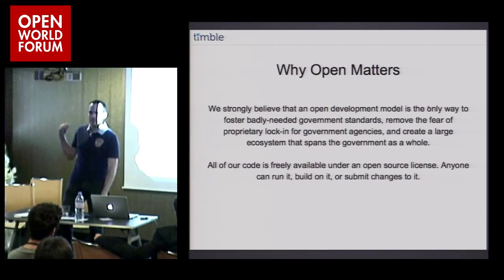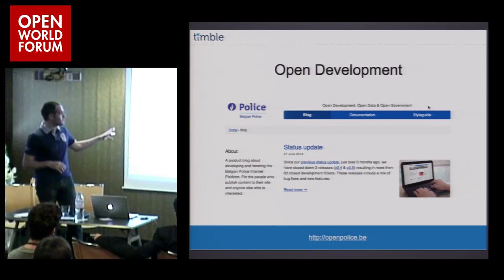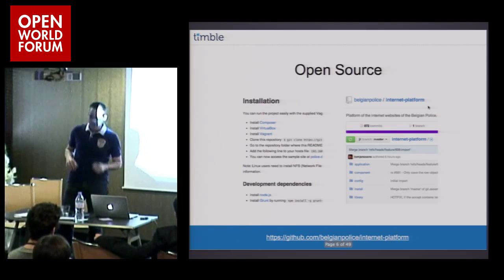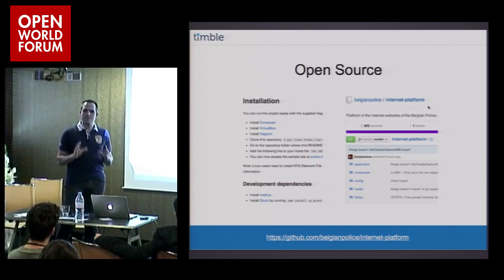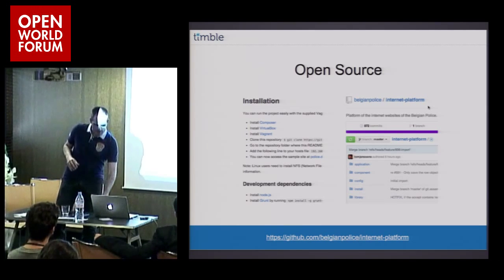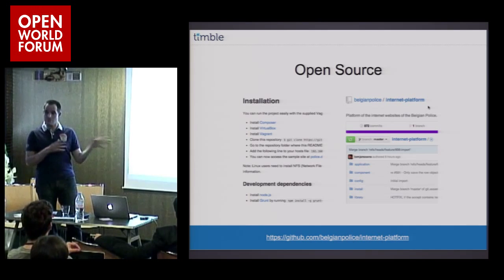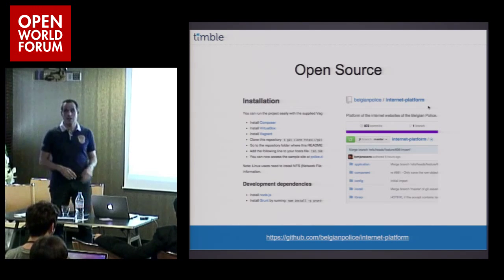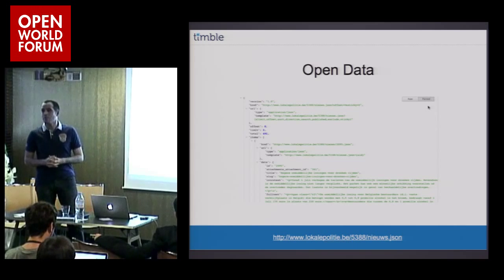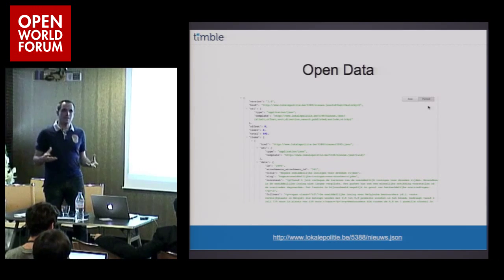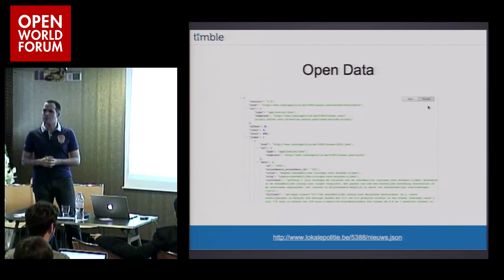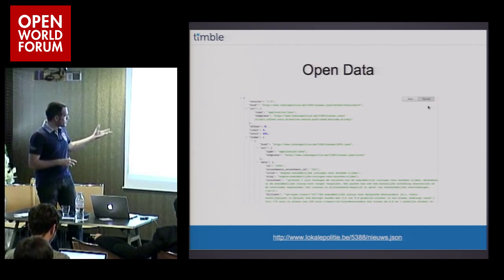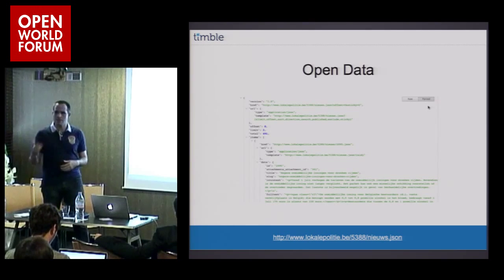Why open matters — we don't have time for it, you know all that. It's open development: we have a website where you can follow everything that we do, openpolice.be. It's open source — all our code is published on GitHub and you can see the development happening on a daily basis. You can even install the platform and test it yourself. The instructions are in the readme file in the repository. It's also an open data web service. We're integrating with different open data web services, for example with AGIV in Belgium, which is the geolocation portal. And we're also going to publish our own open data later this year.